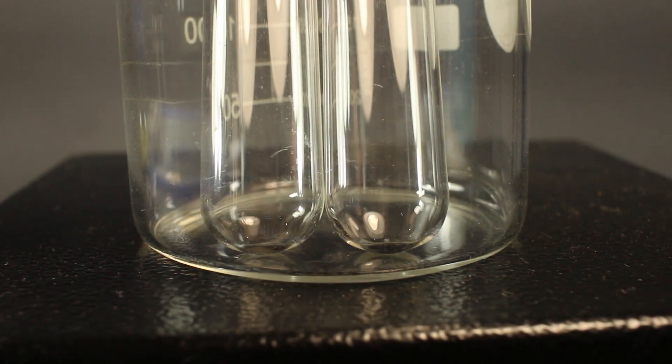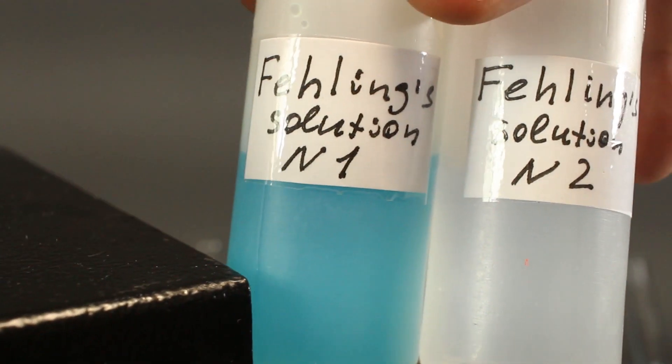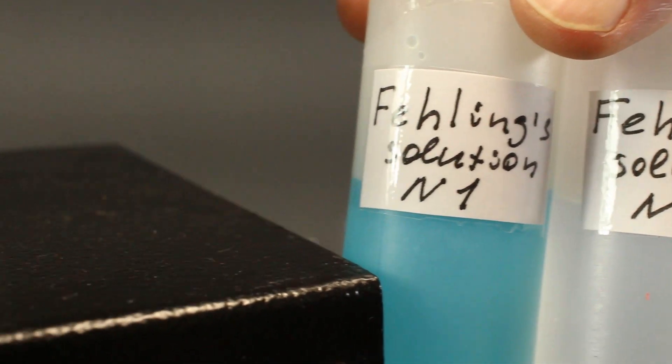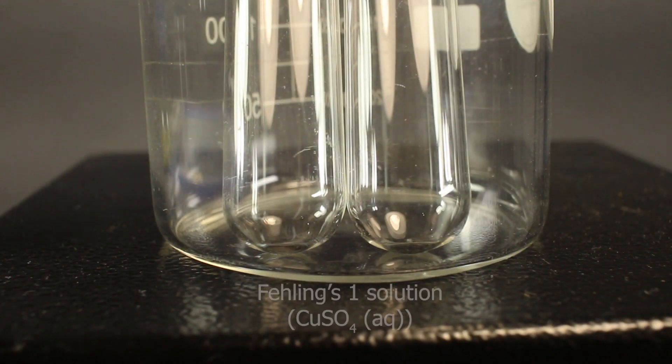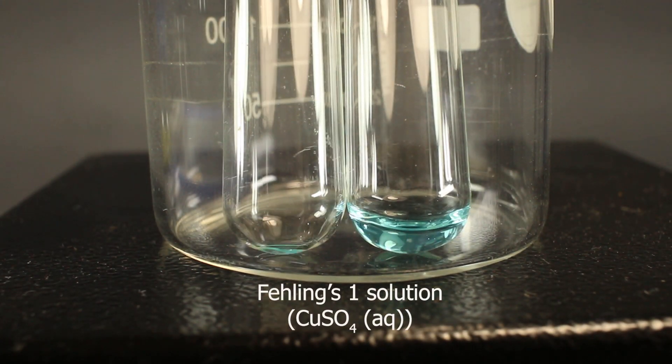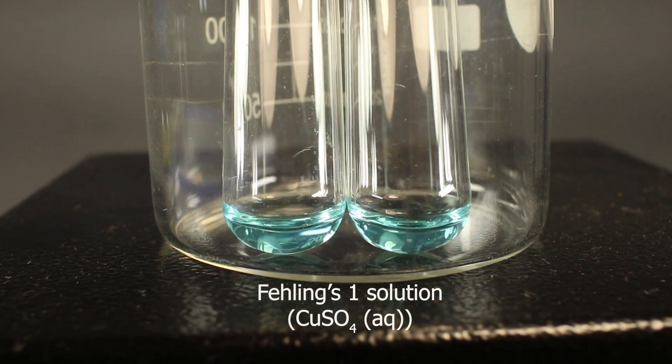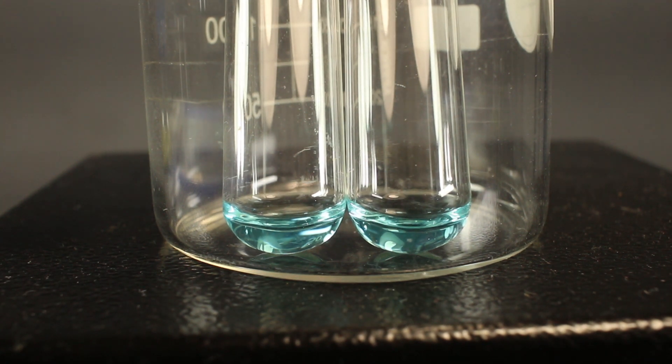What is it actually? It's a mixture of two solutions, Fehling 1 and Fehling 2, which have to be mixed just before making the test. Fehling 1 is just solution of copper 2 sulfate in water, light blue liquid. And Fehling 2 is solution of sodium hydroxide and potassium sodium tartrate.